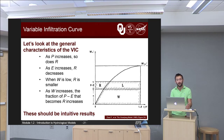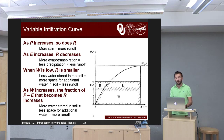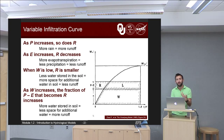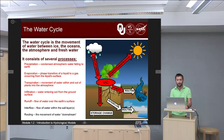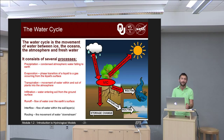This slide recapitulates the relationships between P, E, R, L, W, F, and other factors being modeled. You won't necessarily see them in the model, but you should constantly have them in the back of your mind as you use and interpret model results. Going back to the water cycle where we started — the things highlighted in red include VIC, precipitation, evapotranspiration, infiltration, and runoff, all surrounding the VIC. These are all things we've discussed. Now we need to discuss interflow, routing, and storage change.